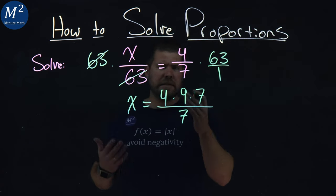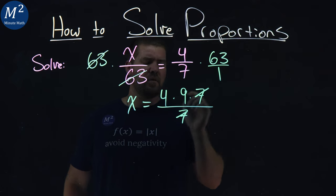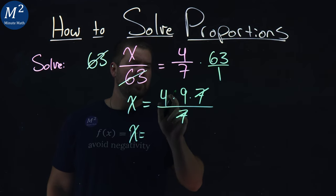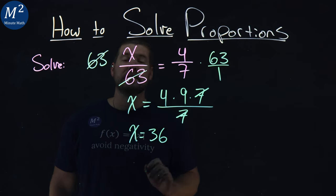From there, well, easy to see the cancellations. 7s cancel, and we're left with x equal to 4 times 9, which is 36.